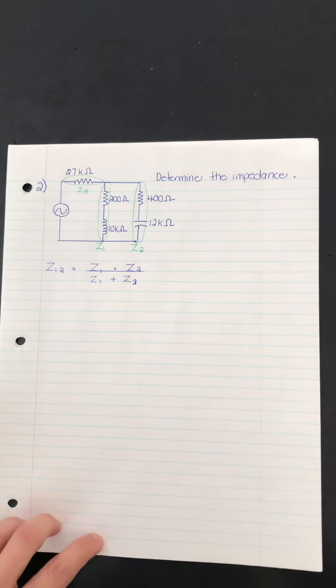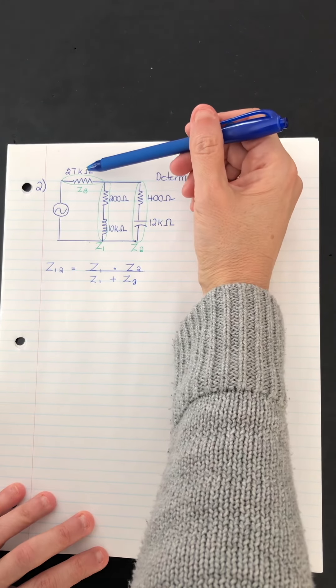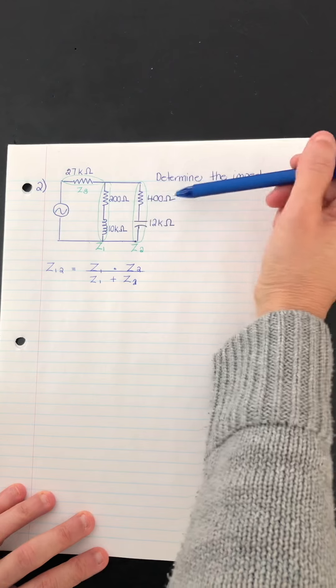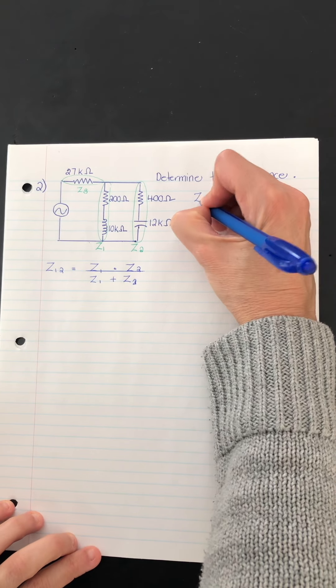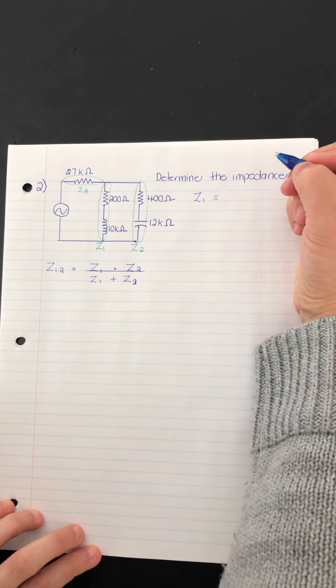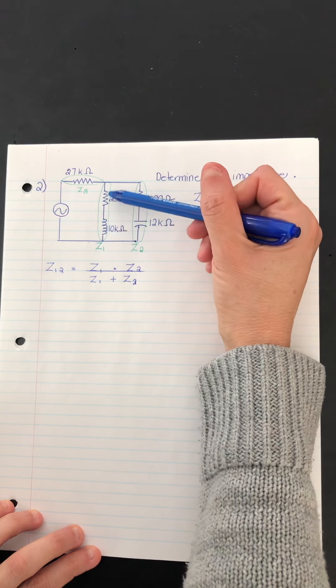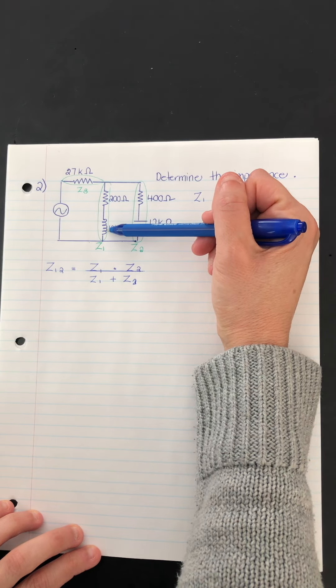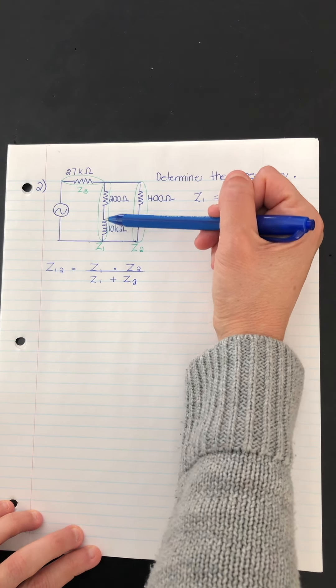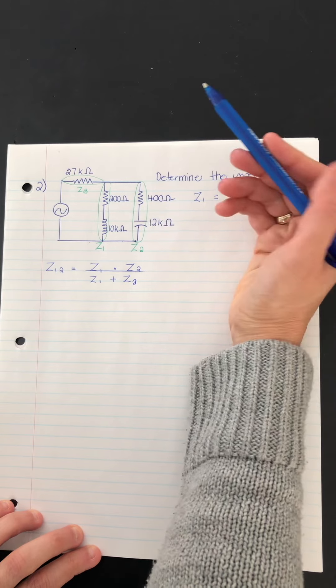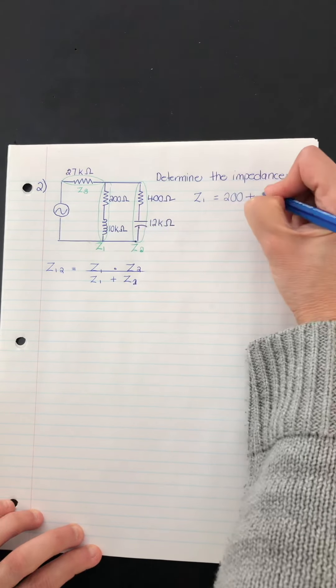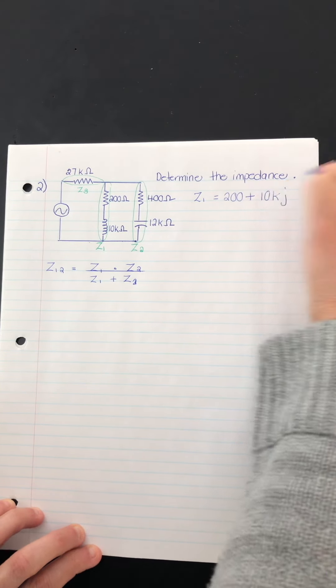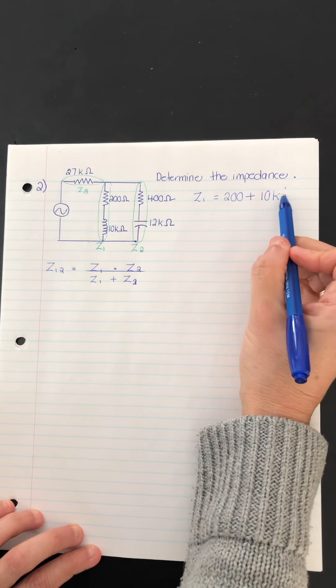So here we go. I'm going to take a quick look and note that everything's already in ohms, which is great. So we don't need to use those XL and XC formulas. So over here, I'm going to write my expressions for Z1, first of all. So here's Z1. It has a resistor and an inductor. So I need R plus XLJ. So 200 plus 10 kilo J. So again, R plus XLJ. That's correct for that branch.